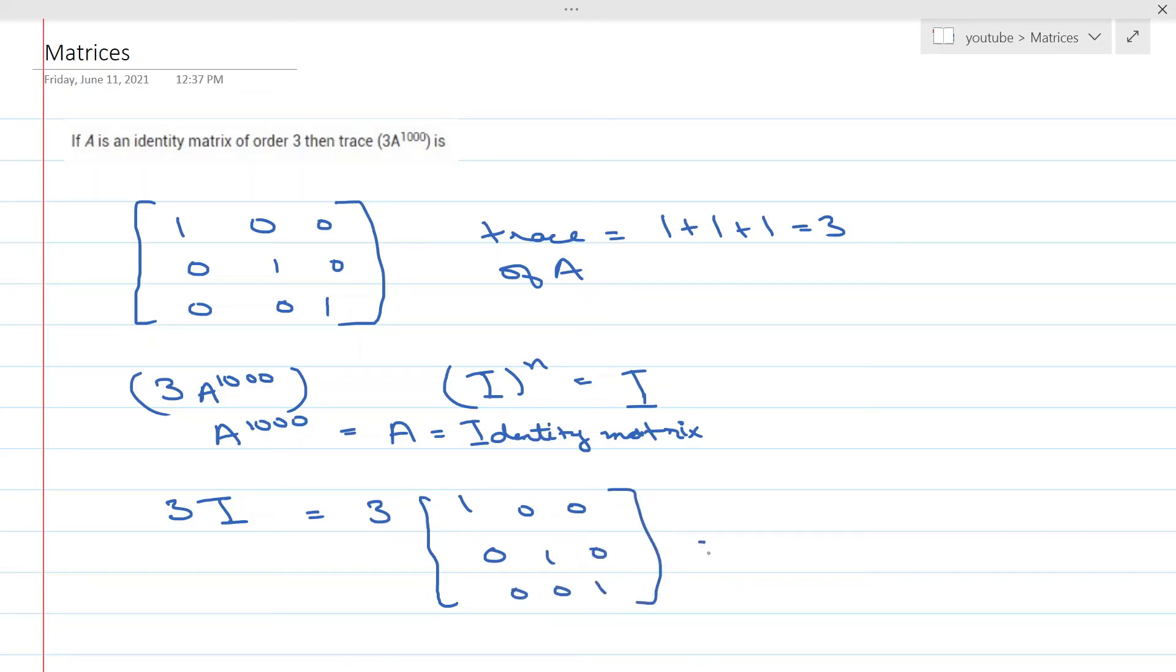So if I multiply this and do my scalar multiplication, I am going to get 3, 0, 0, 0, 3, 0, 0, 0, 3.